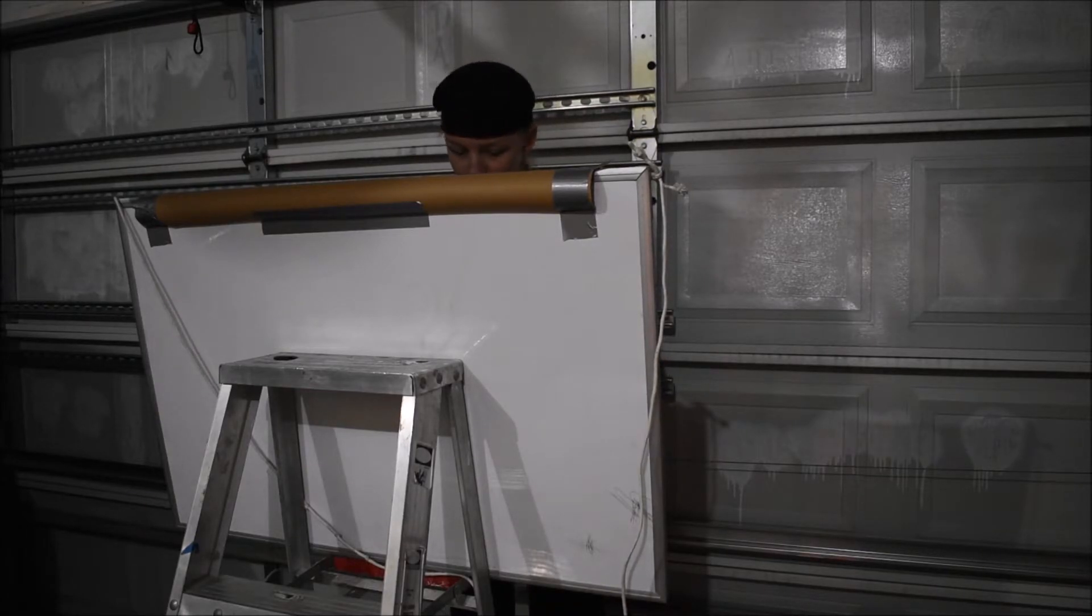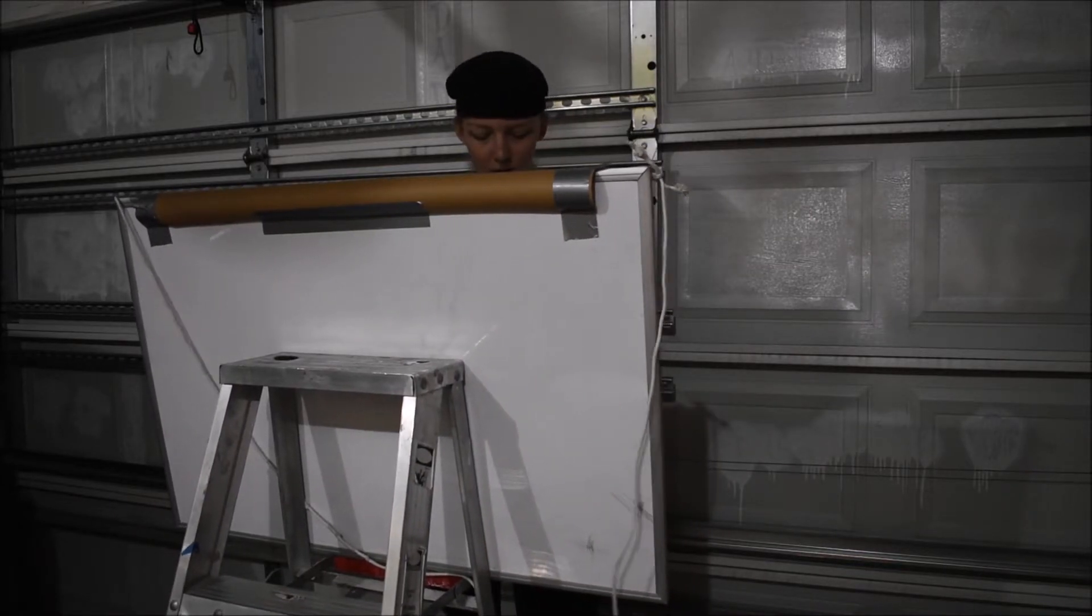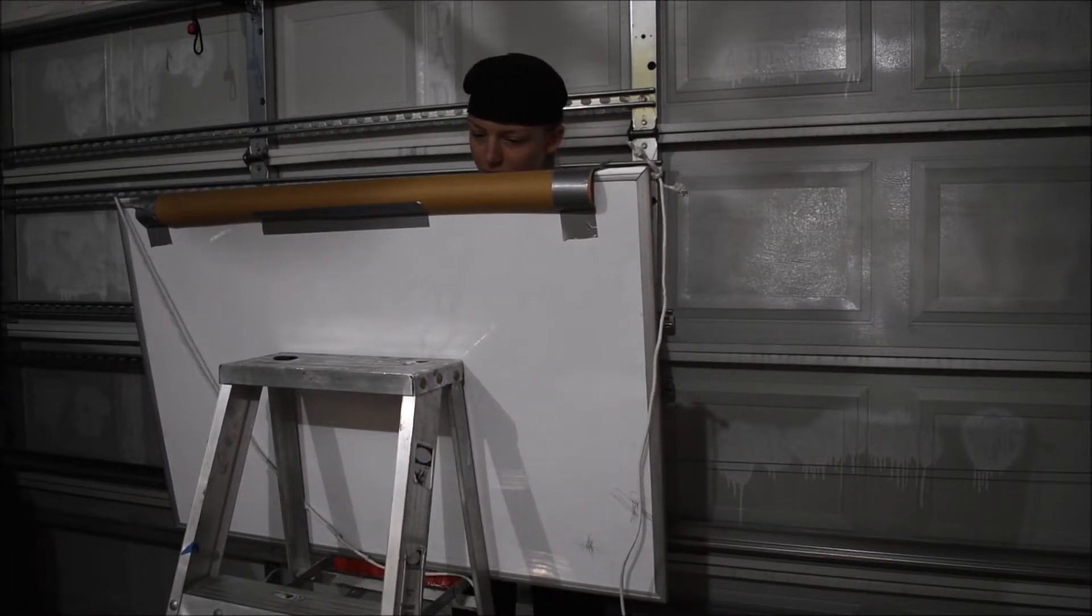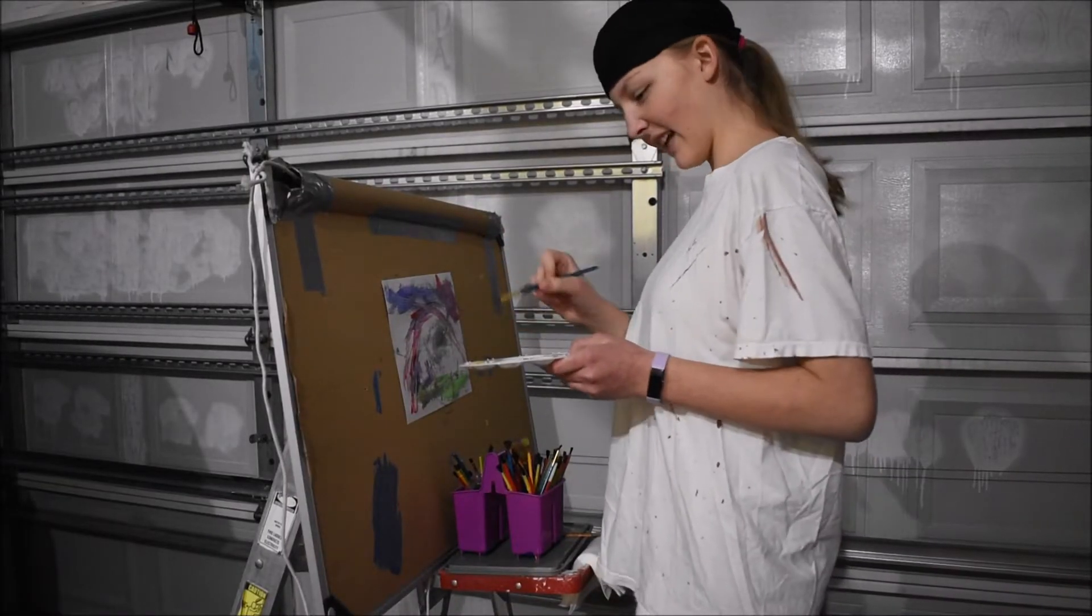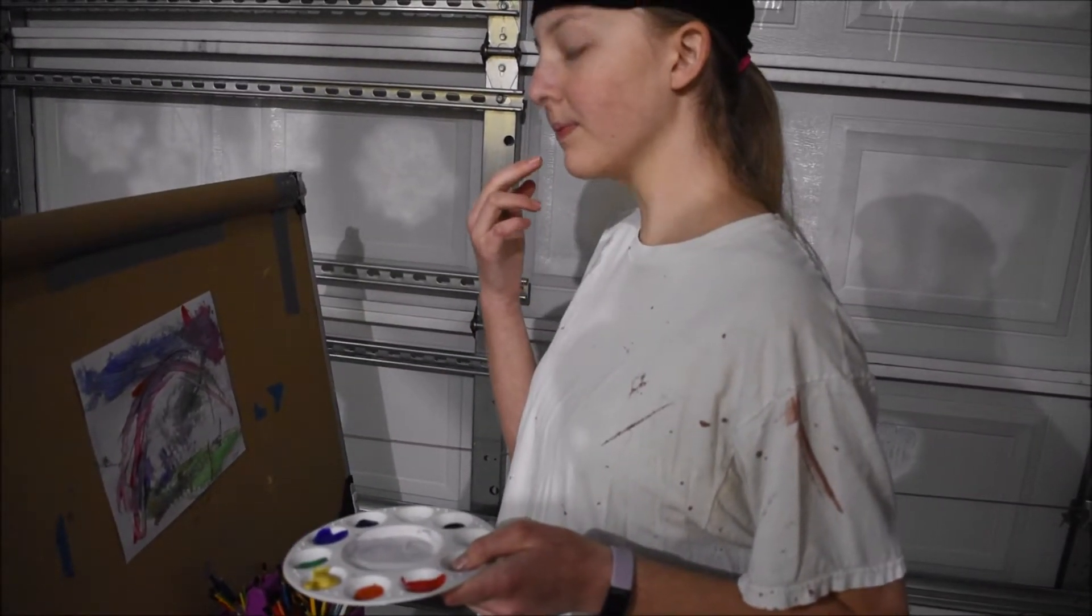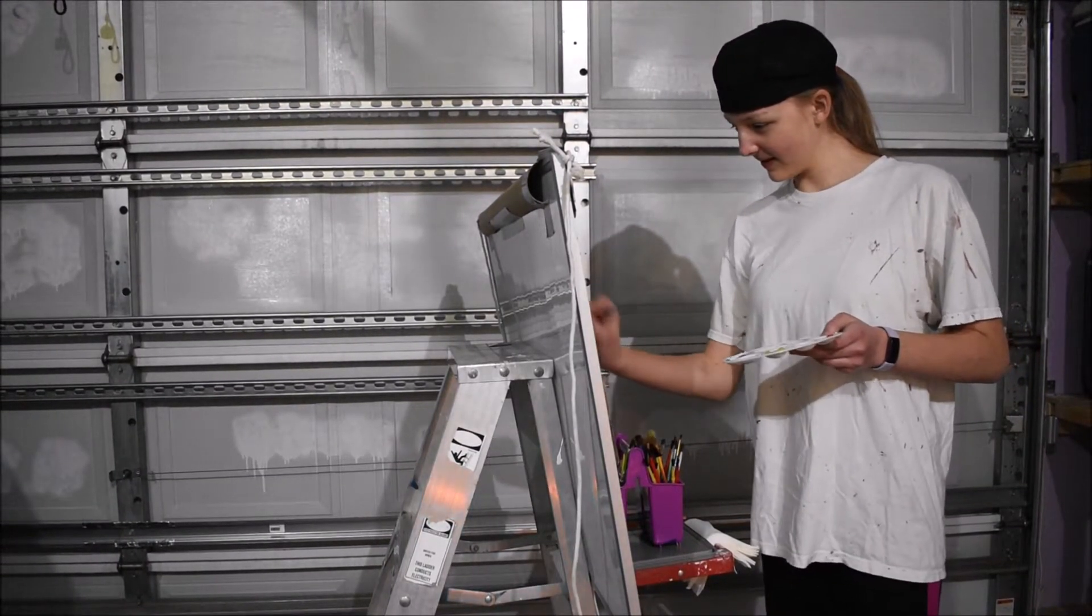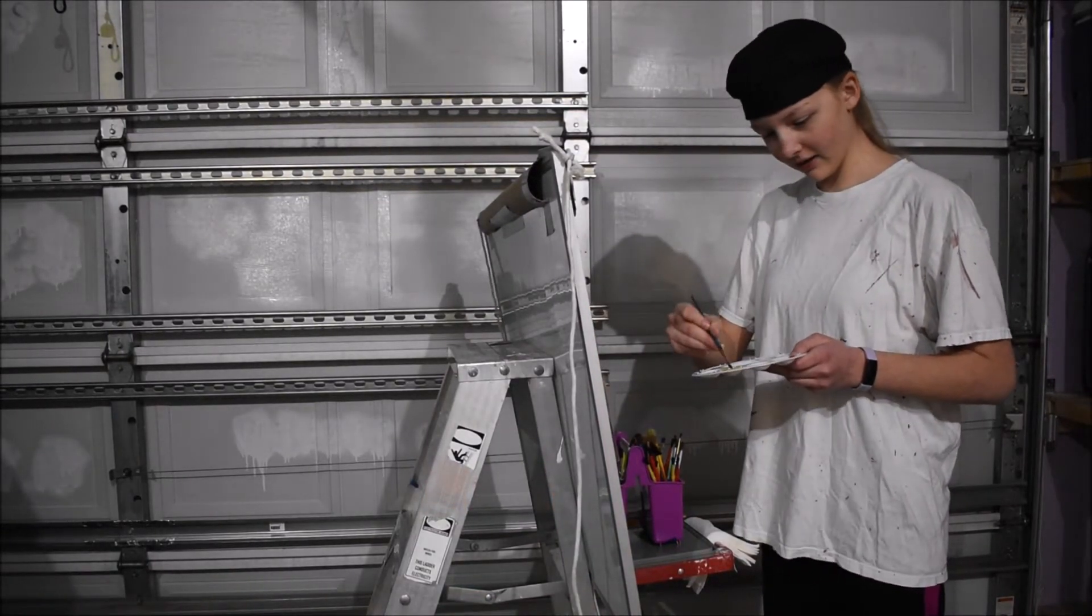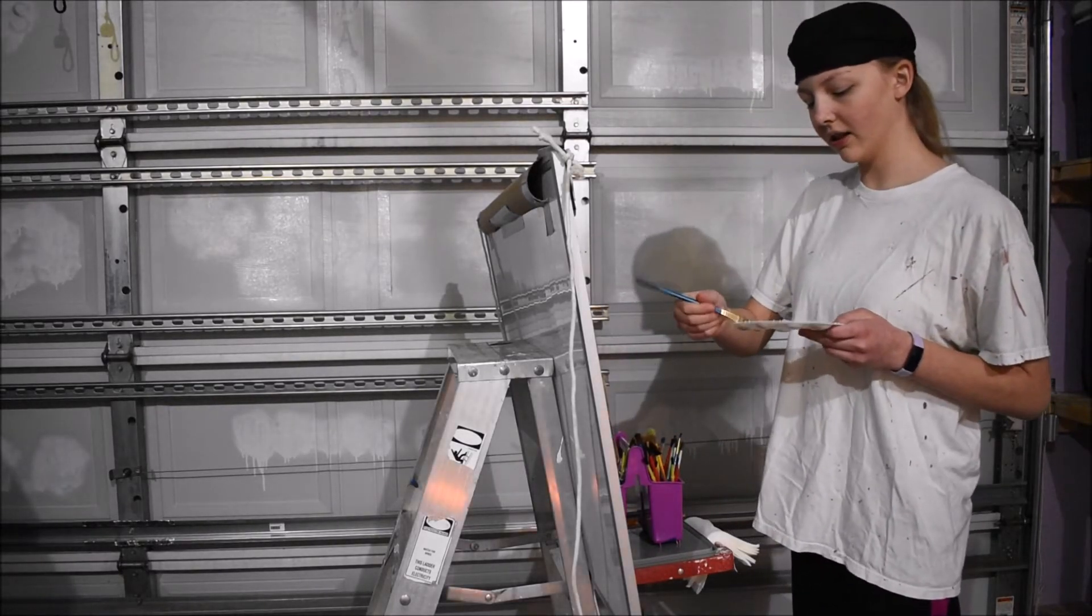Now we're gonna start with the rainbow. Start with red, get it flowing. It's perfect. We're going to the orange. This does actually need yellow. Yes, I need yellow. Yellow makes it beautiful.